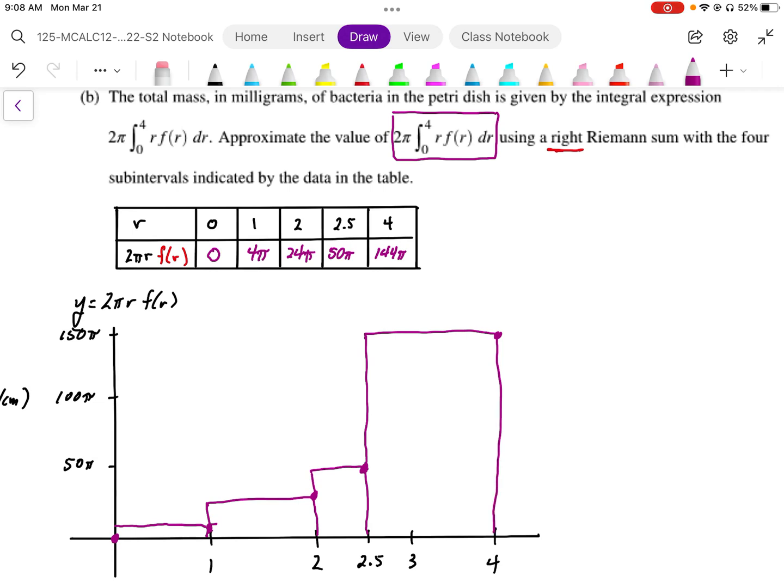Calculating the area of each of these rectangles. The first rectangle is height of 4π times width of 1, so we have this area here is 4π. In the next rectangle we have height of 24π, width of 1, so that's going to be 24π.